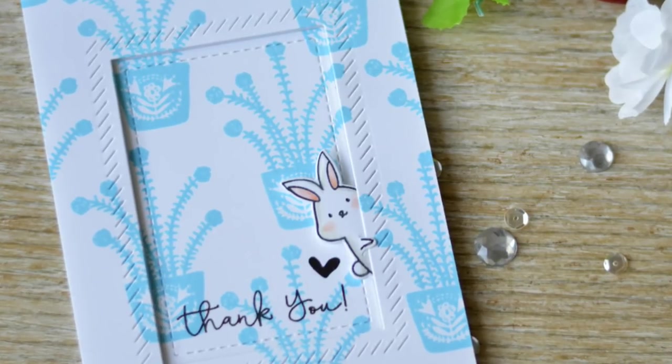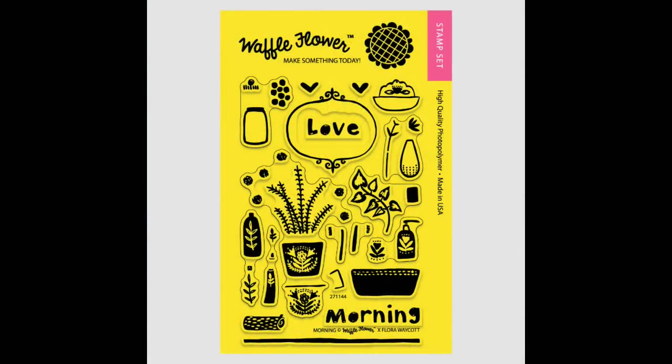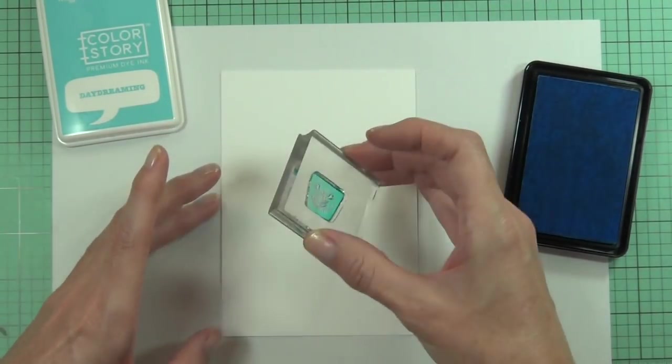In this video I'm going to add some details in a very easy way using a die. But first I'm going to start by stamping out a background, and I'm using the Morning Love stamp set.